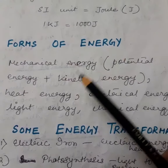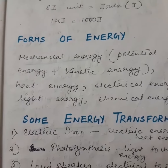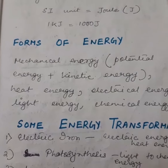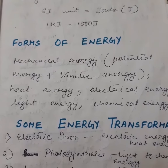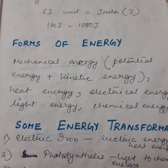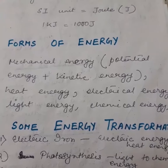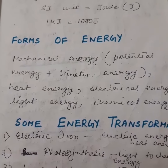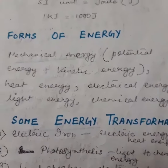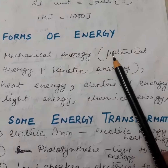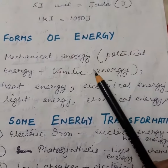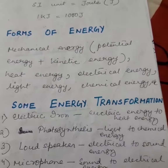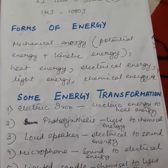Then we have mechanical energy. Mechanical energy means potential energy plus kinetic energy. In this chapter, we shall learn in detail about kinetic energy and potential energy. There are different forms of kinetic energy and different forms of potential energy, and there is a specific formula for each. Just remember: mechanical energy comprises potential energy plus kinetic energy. The other forms include heat energy, electrical energy, light energy, chemical energy, etc. But in this chapter, we are only going to study about mechanical energy.